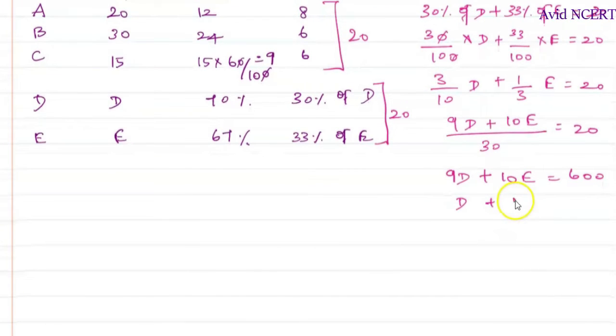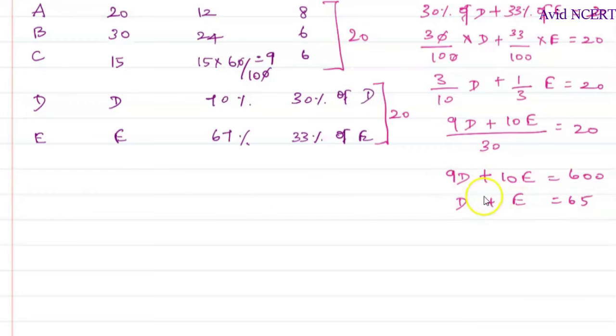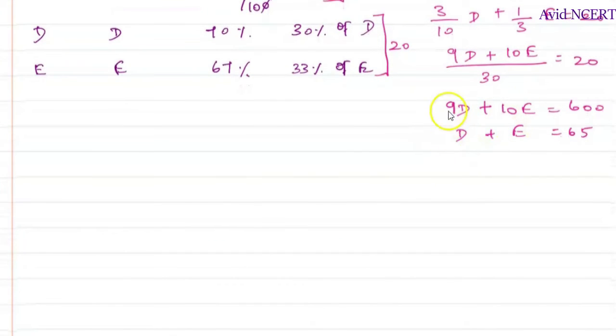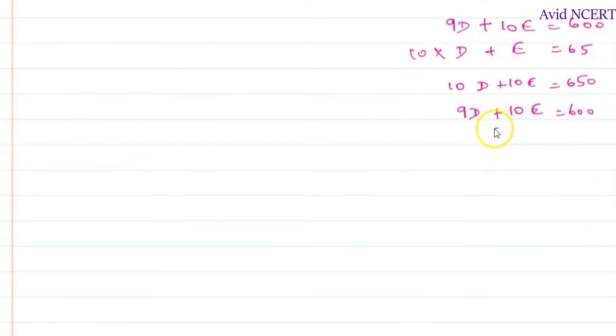First equation here is D plus E equals 65. Now to simplify this to find the value of D and E, we can multiply by 9 or 10, but I am using 10 here as it will be easier. So multiply this entire equation by 10, which is 10D plus 10E equals 650. And this equation which is 9D plus 10E equals 600. Changing the signs, we are going to cancel this E term. So cancelling E terms, which is 10 minus 9 is 1D equals 650 minus 600 is 50. So which means D equals 50.